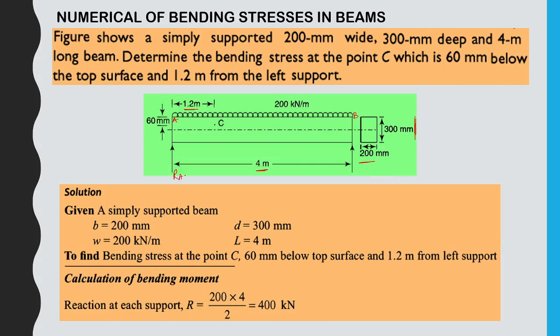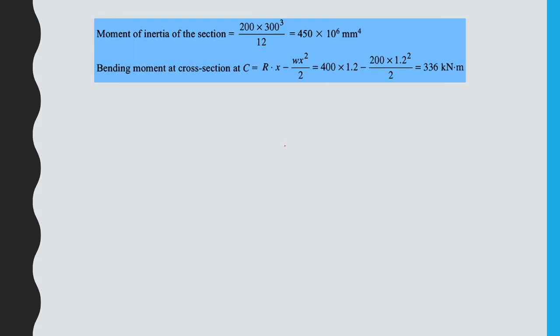So RA = 400 kN. Please refer to the bending moment and shear force videos for detailed steps. The moment of inertia of the section is BD³/12 for a rectangular section, which gives 450 × 10⁶ mm⁴.